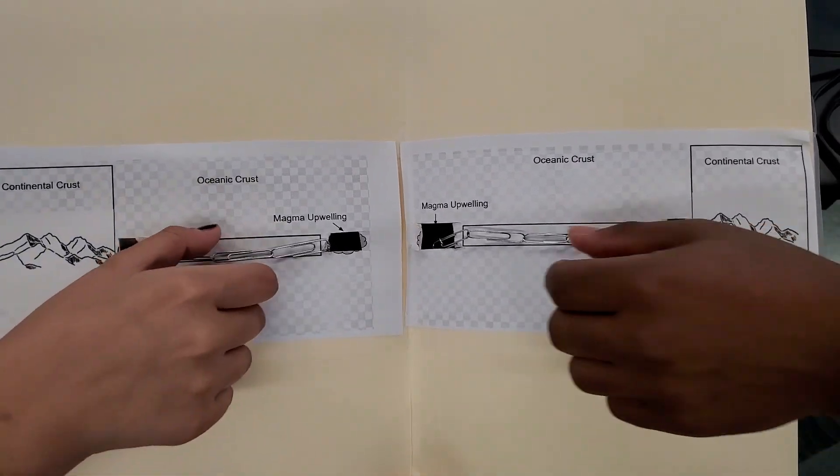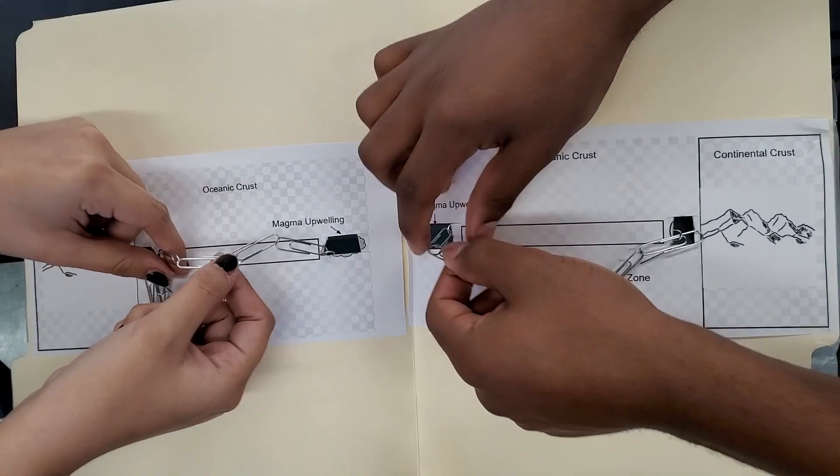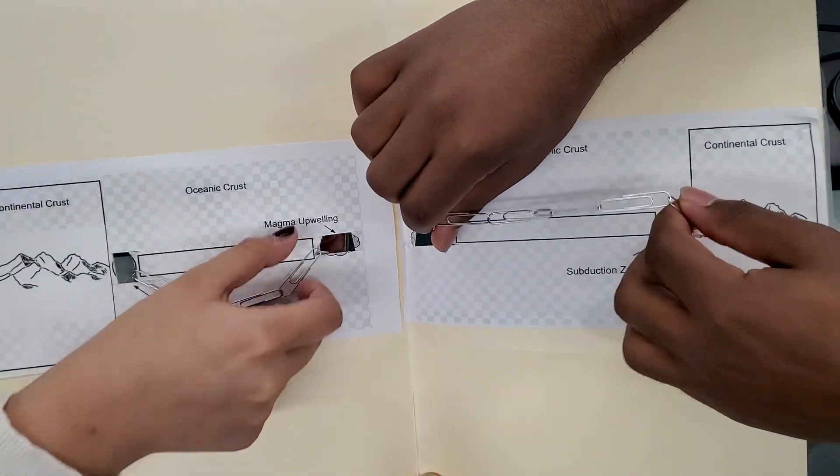Divergent boundary. If it gets stuck, you have to unhook it.